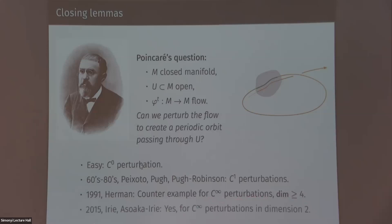So now what about dimension two? Well, there is maybe even more surprising positive results from 2015 by Irie and Asaoka-Irie. They basically say that yes, you can produce periodic orbits with C infinity perturbations in dimension two. They actually proved something stronger than that. So they proved that it's enough to perturb your flow in the open set U, which is kind of what you would expect if you try to do it by hand. So what they show is there are plenty of perturbations that are C infinity small supported in this open set that will produce periodic orbits passing through the open set.